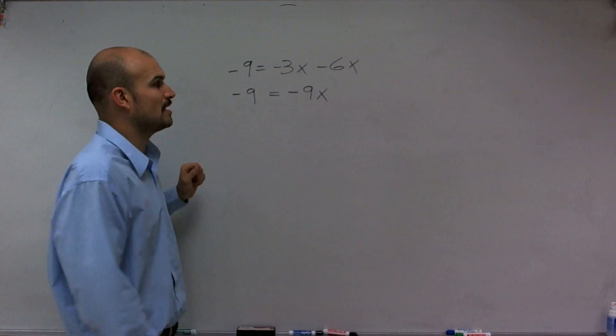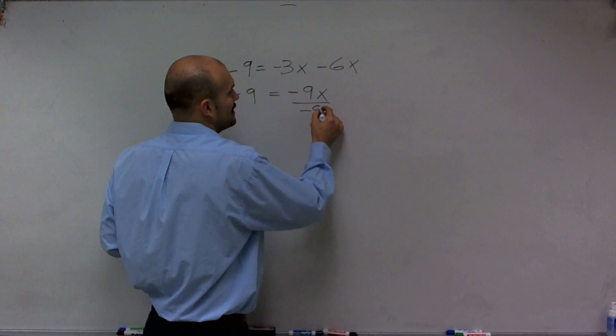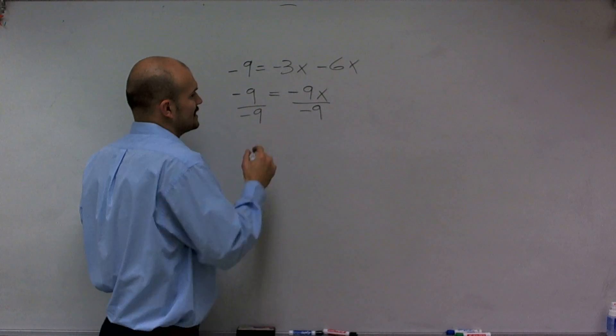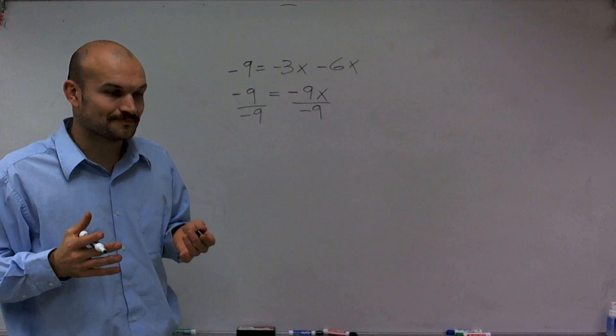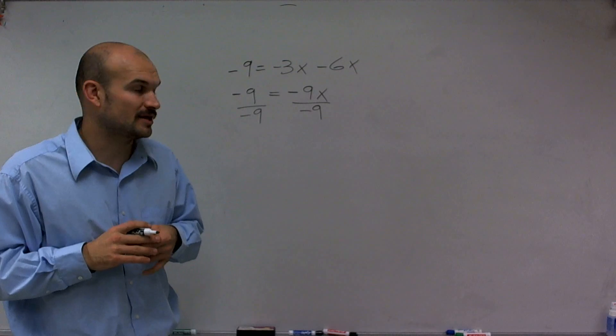So therefore, since it's being multiplied by -9, I need to divide by -9 on both sides of the equation, called the division property of equality.